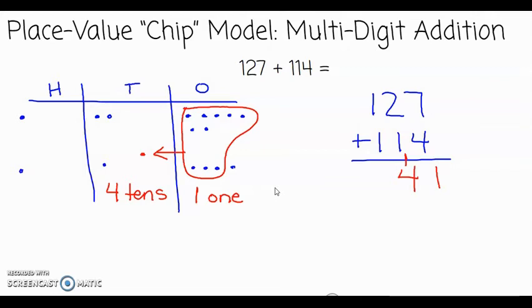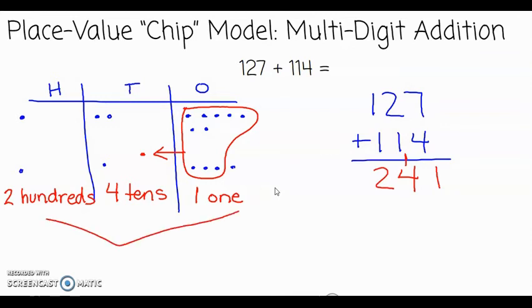In the hundreds column, I see there are two hundreds. Looking at the algorithm in the hundreds column, I see one plus one, which gives two hundreds. Therefore, the sum of 127 plus 114 is 241.